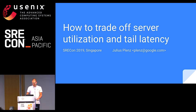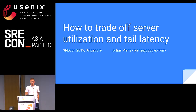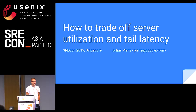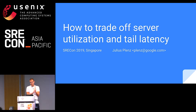Hi and welcome to the last day — 10 a.m., it's early. Thanks for showing up. I want to talk to you today about how to trade off server utilization and tail latency. The previous talk talked about latency SLOs and just said things about the 99th percentile, but what does this 99th percentile of the latency — how is it made up?